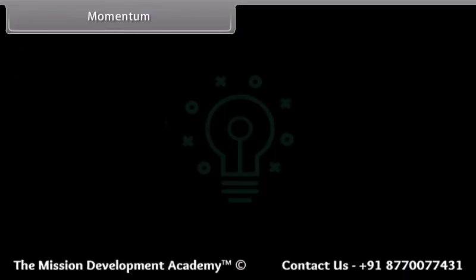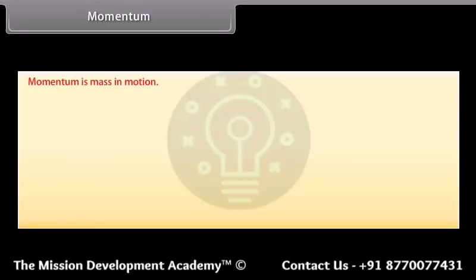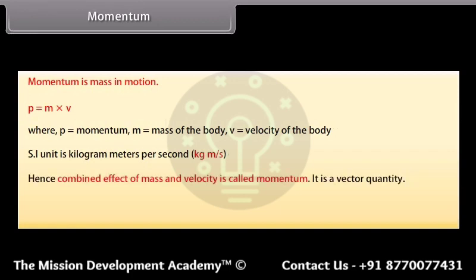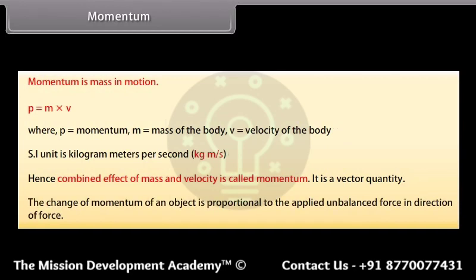Momentum is mass in motion. P equals m times v, where P is momentum, m is the mass of the body, and v is the velocity of the body. The SI unit is kilogram meters per second. The combined effect of mass and velocity is called momentum. It is a vector quantity. The change of momentum of an object is proportional to the applied unbalanced force in the direction of the force.